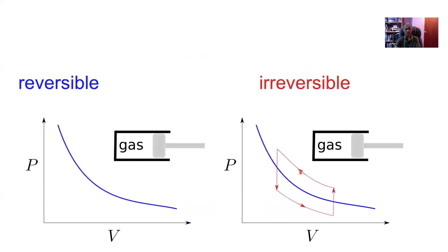To distinguish between a reversible and an irreversible process we'll use a mechanical analogy where we have a cylinder containing an ideal gas and a piston, and this is the pressure versus volume characteristic of that ideal gas. In this case I'm assuming that the piston is frictionless. So if we start at some point and apply pressure to move the piston to the left, the volume will contract exactly along this curve, and when I release the pressure it will go back exactly along that curve to the original state. There is no energy dissipated in this process.